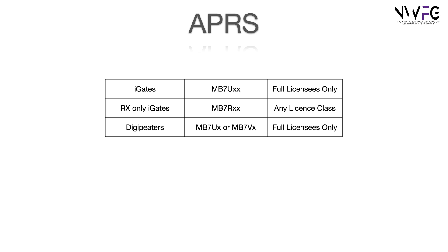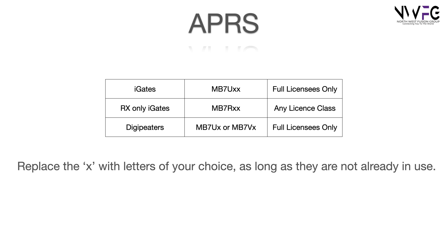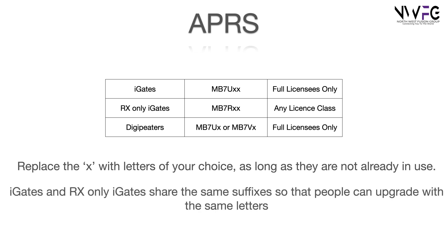APRS is slightly different. There are iGates, receive-only iGates and DigiPeaters. iGates are MB7U and can be operated by full licensees only. Receive-only iGates can be held by any license class, because there's no transmission on radio frequencies. DigiPeaters are MB7U or MB7V and can be operated by full licensees only. Again, you can replace the X with letters of your choice as long as they're not already in use.